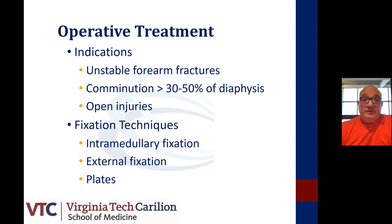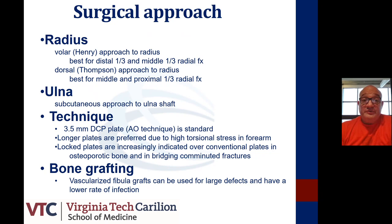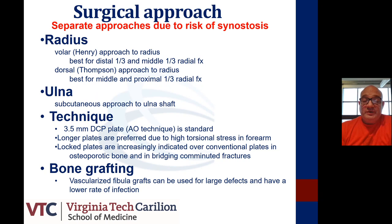Most require operative fixation, and the standard of care is plates and screws. The surgical approach depends on the bone being treated. For the radius, we discuss the volar anterior Henry approach or the dorsal Thompson approach. For the ulna, we discuss the Boyd approach, which is a subcutaneous approach to the ulna between the FCU and the ECU. We don't recommend a single incision because the risk of synostosis is fairly high with a single incision approach for both the radius and the ulna.